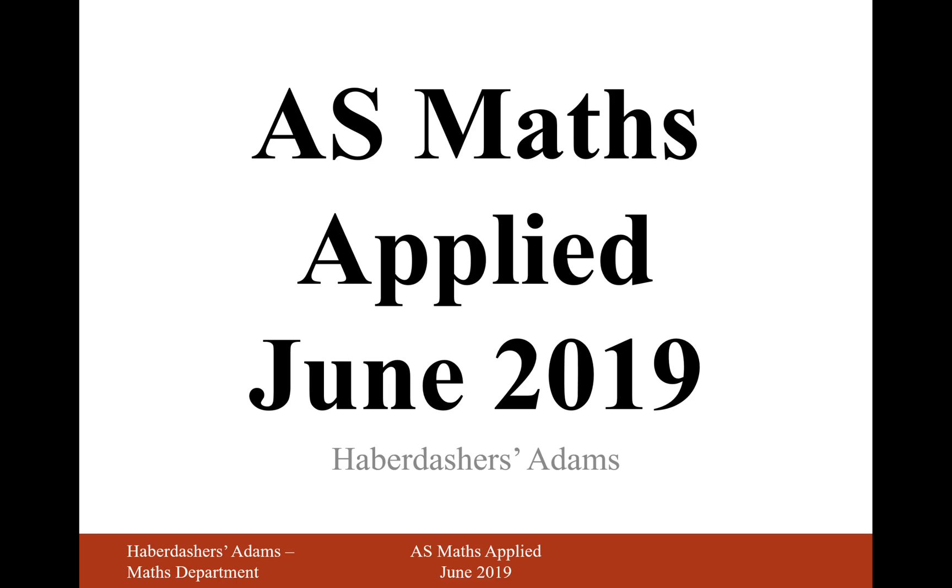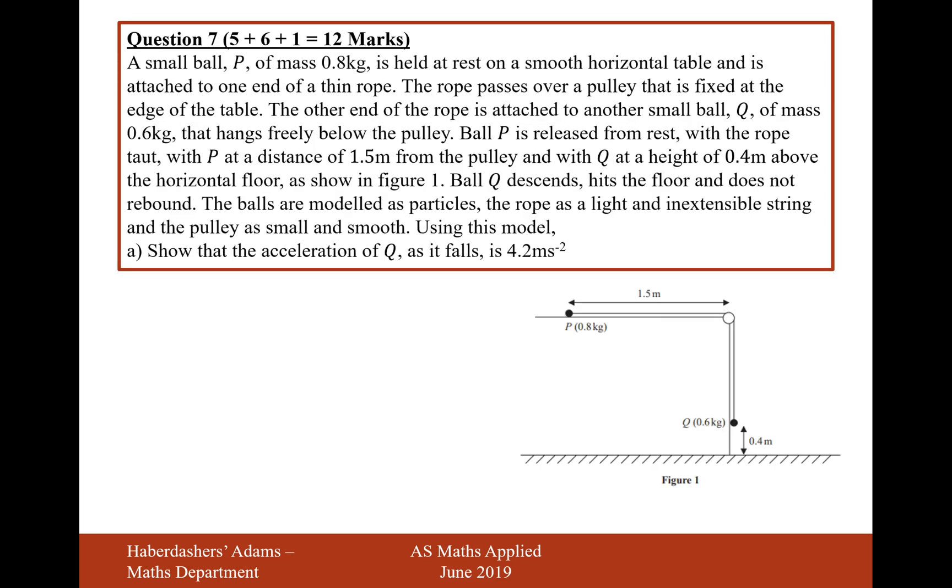Hello there, welcome to the June 2019 Applied Paper. Here we're looking at question 7. A small ball P of mass 0.8 kilograms is held at rest on a smooth horizontal table and is attached to one end of a thin rope.